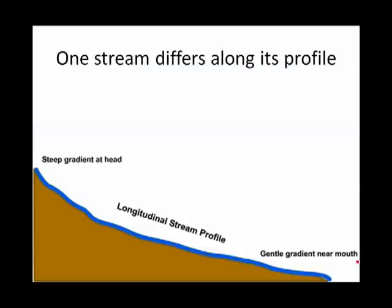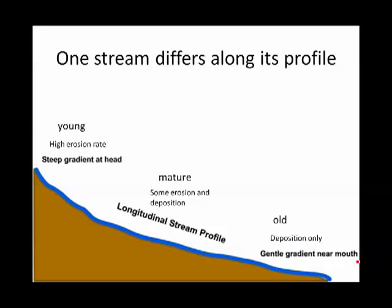One stream can do all these processes, but it does them in different parts. At the steep headwaters of a stream you have a very high erosion rate; along its trunk you have both erosion and deposition; and at the very gentle mouth you have only deposition. We can call the steep headwaters young, the middle mature, and the mouth old.